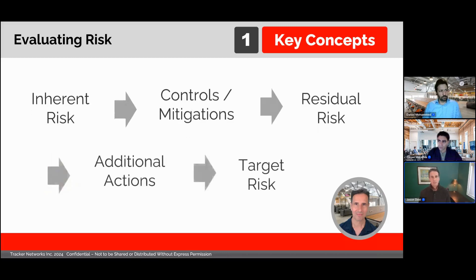In some cases, we might decide the level of residual risk is too high and that we should take more steps to lower the risk further. In this case, there's a lower level of risk that we might want to get to for a given item, and we would call this our target risk level.